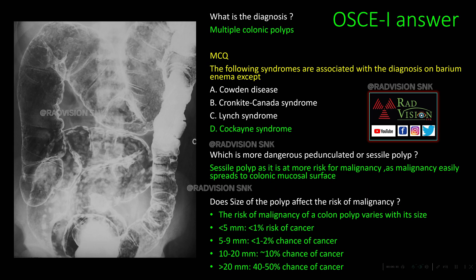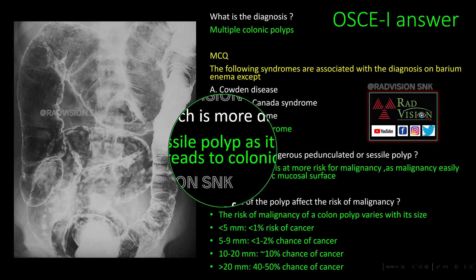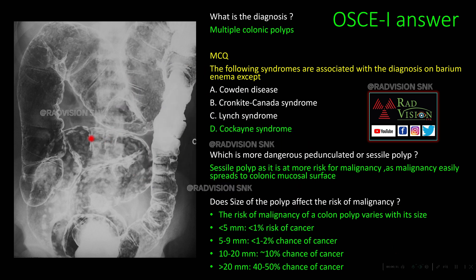Coming to the first OSCE, this is a double contrast barium enema where you can see multiple polypoid lesions noted within the colon — these are multiple colonic polyps. What are the syndromes commonly associated with this diagnosis? They are commonly associated with Cowden syndrome, Cronkhite-Canada syndrome, and Lynch syndrome, but not with Cockayne syndrome. It is also associated with Peutz-Jeghers syndrome, Gardner syndrome, and Turcot syndrome.